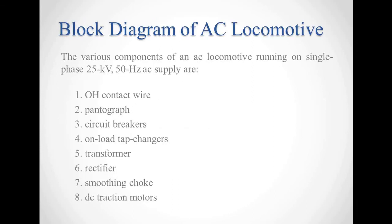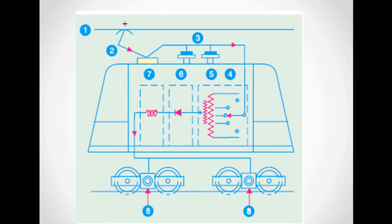The block diagram of AC locomotive. The AC locomotive has the following components. The first one is the overhead contact wire. Second, the pantograph collects this power at 25 kV. It is then given to the circuit breaker, which is the third component of our AC locomotive.